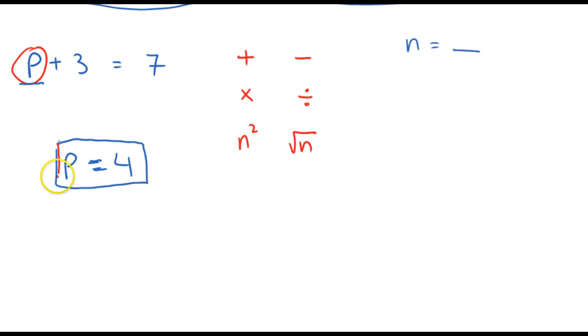And in order to understand how to solve equations, you need to understand that adding is the opposite of subtracting. Multiplication is the opposite of dividing, and squaring something is the opposite of square rooting that same thing. Okay, so to solve for this P, I need to get it by itself, or I need to get it on its own on the left side, just like it is here.